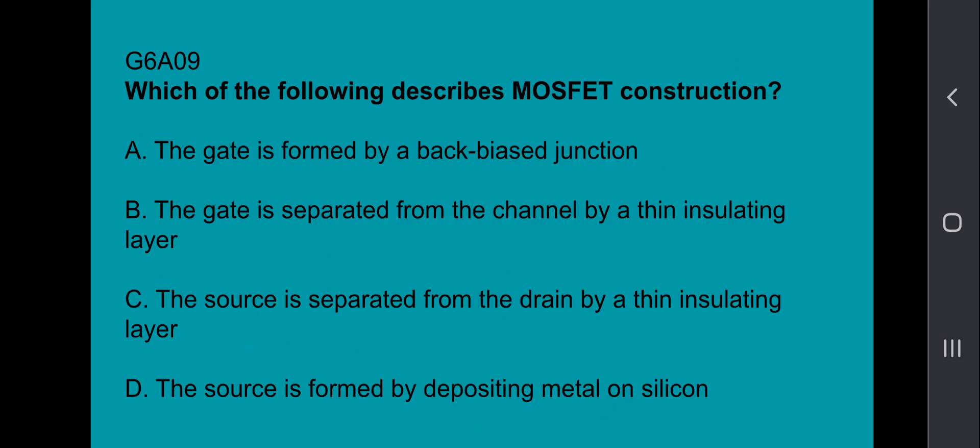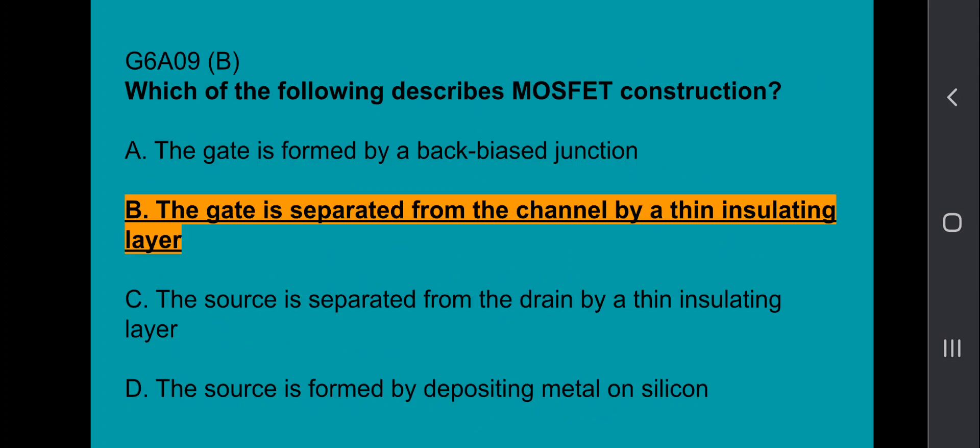G6A09: Which of the following describes MOSFET construction? The gate is separated from the channel by a thin insulating layer.